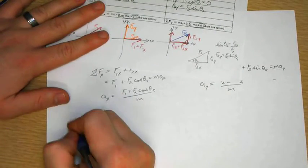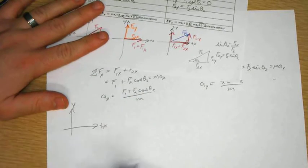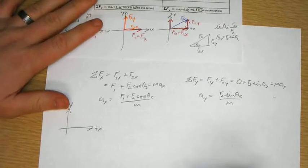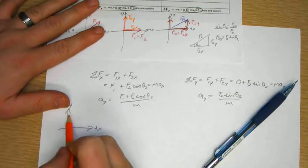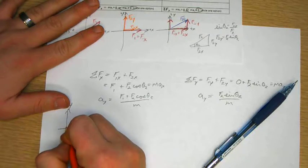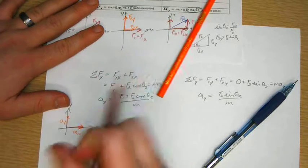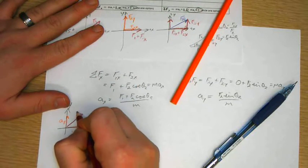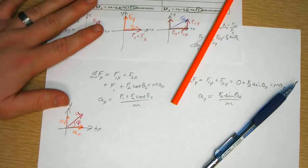So now I have two accelerations. Remember, acceleration and force are really, the only difference is the scale factor m. So I have ax, ay, and I want to find the total acceleration, which is going to be some a at angle, let's call this phi, because it's a new angle.